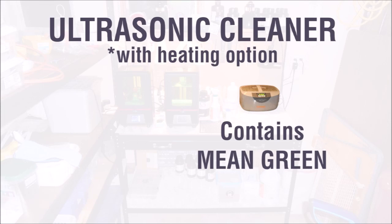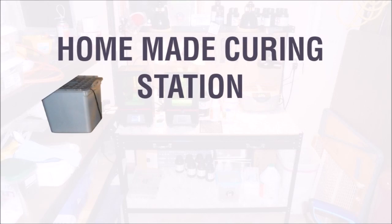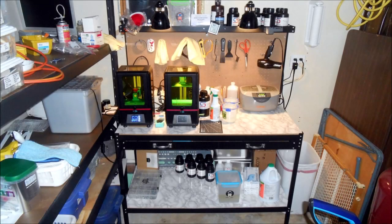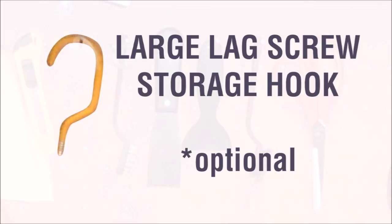Optionally, I have an ultrasonic cleaner that contains Mean Green. We don't want to run IPA in an ultrasonic cleaner because it can aerate the IPA, which can create a fire risk. I have a small homemade curing station off to the side. And lastly, all the useless crap I have laying around this workbench, I'm pretty sure that this storage hook is going to be a necessity, so I would run out and get one as soon as possible.